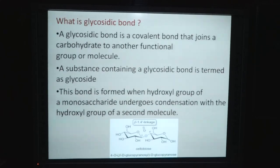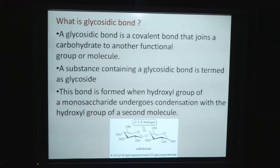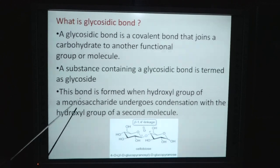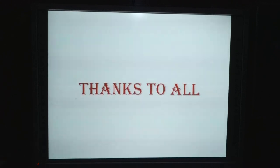A glycosidic linkage is a covalent bond that joins a carbohydrate to another molecule. This bond is formed when the hydroxyl group of a monosaccharide undergoes condensation with the hydroxyl group of a second molecule. Thank you.